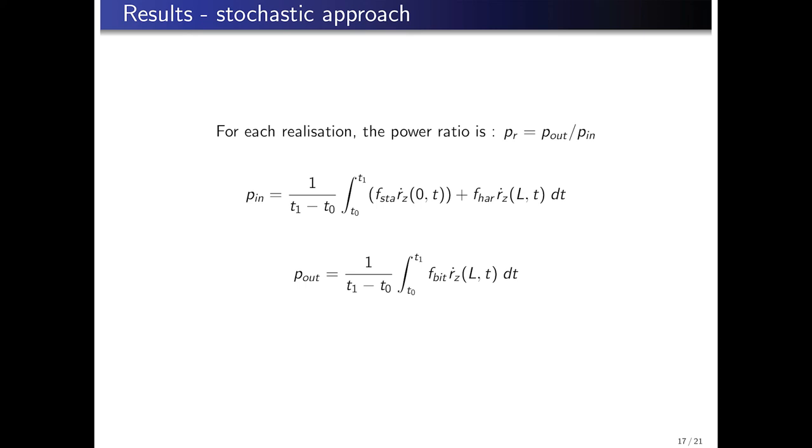In order to have an idea of how these results differ from those of the reference paper, the definition for the power ratio employed in the reference paper is shown here. For each realization, the power ratio is a relation between the power delivered to the bit and the power introduced into the system, and is stated in this slide. The power introduced in this system is represented by two forces shown here, the power transmitted to the system by the pipes which we are not modeling here, and the harmonic force. The power delivered to the bit is the power exerted by the bit force.